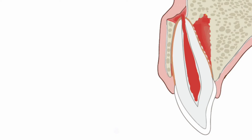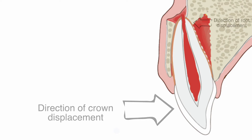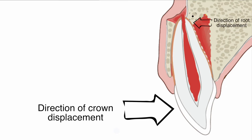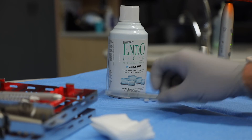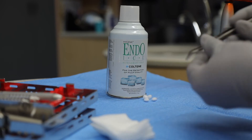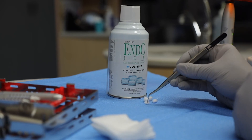What would make this scenario different than a lateral luxation? The difference is that lateral luxation includes a fracture of the buccal or lingual side of the socket wall, whereas with extrusion there is no fracture of the alveolar wall.